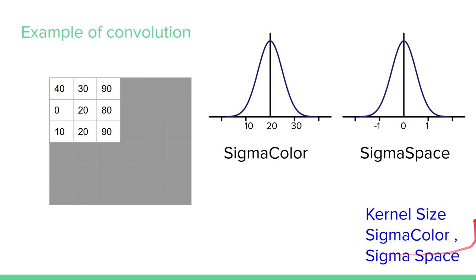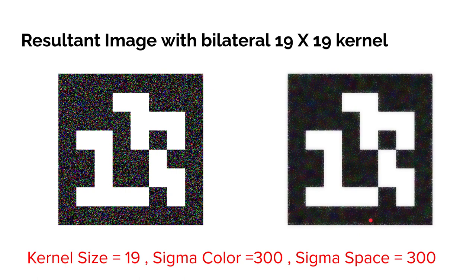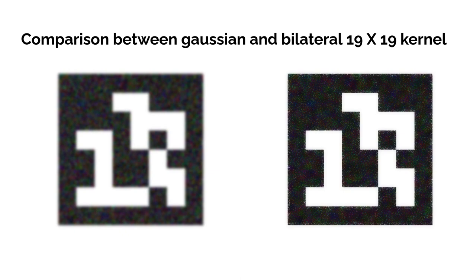So to use bilateral filter we need three things. So if we have 19 by 19 kernel with sigma of color and sigma of space as 300, this is the output. So you see reduction in noise is tremendous but you are not losing the edges.